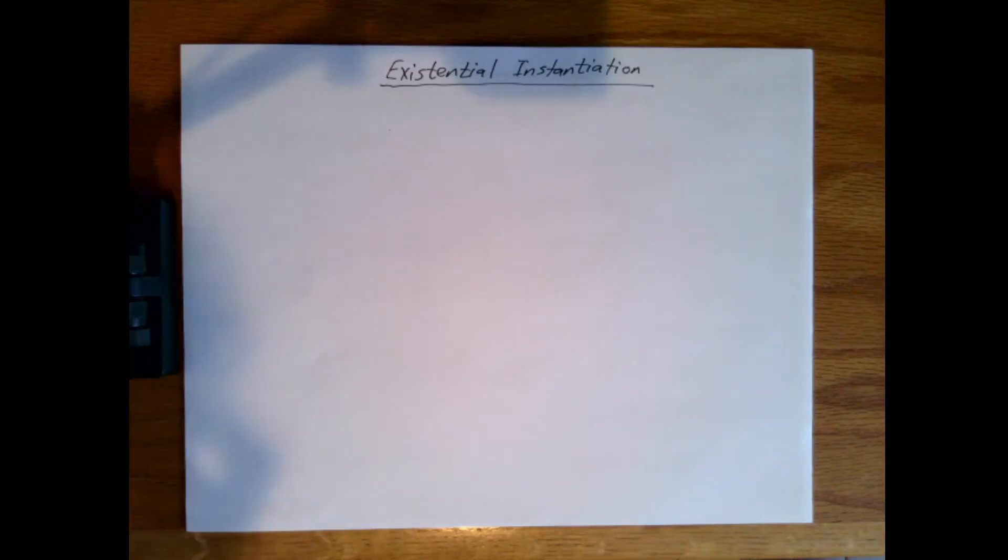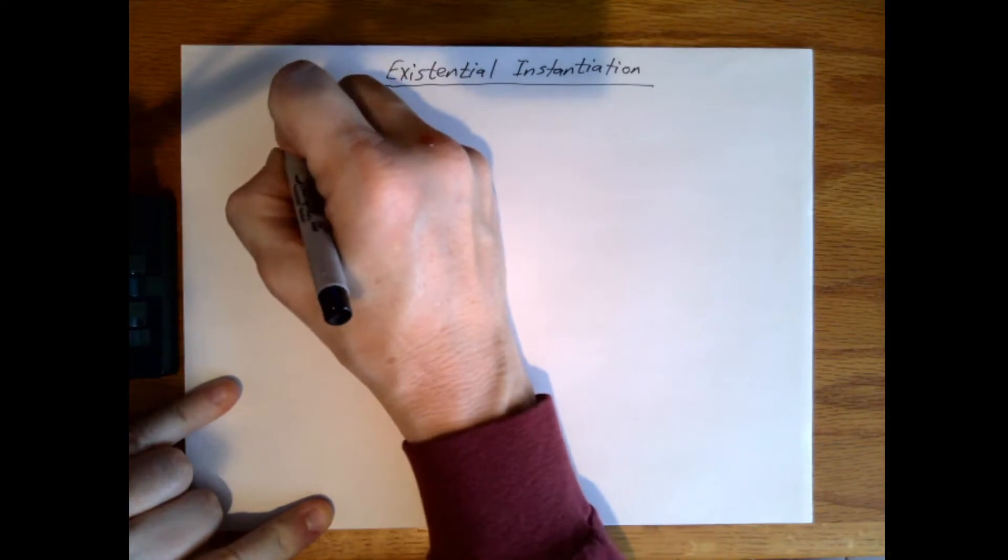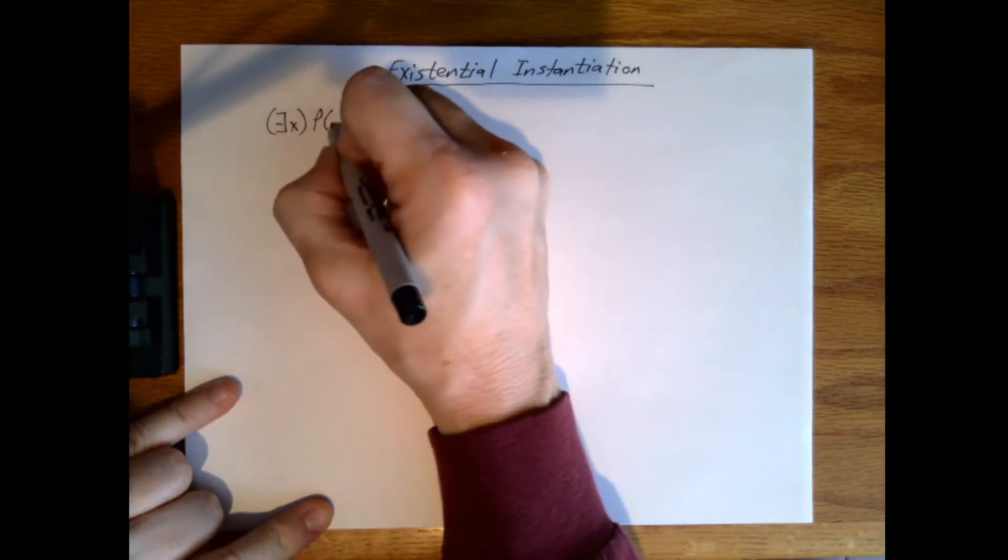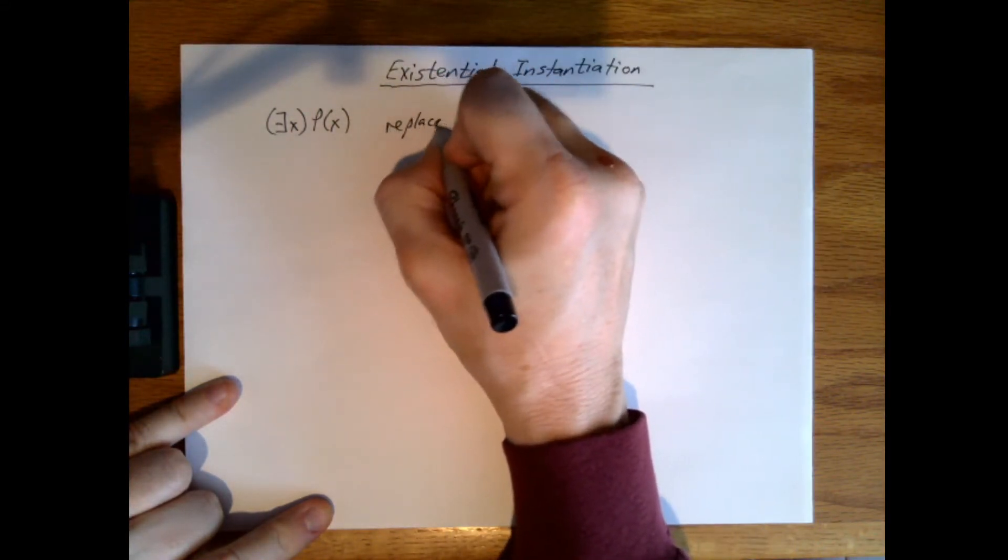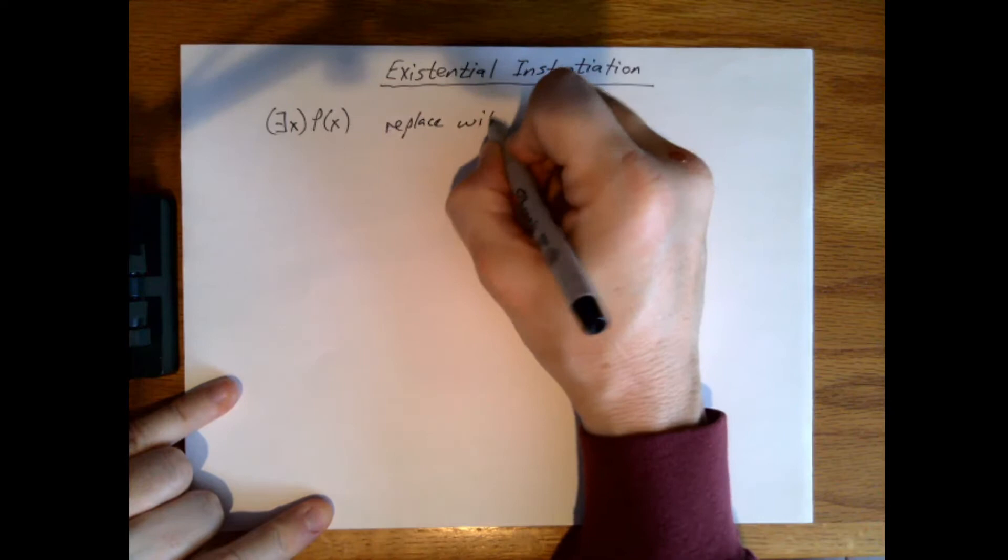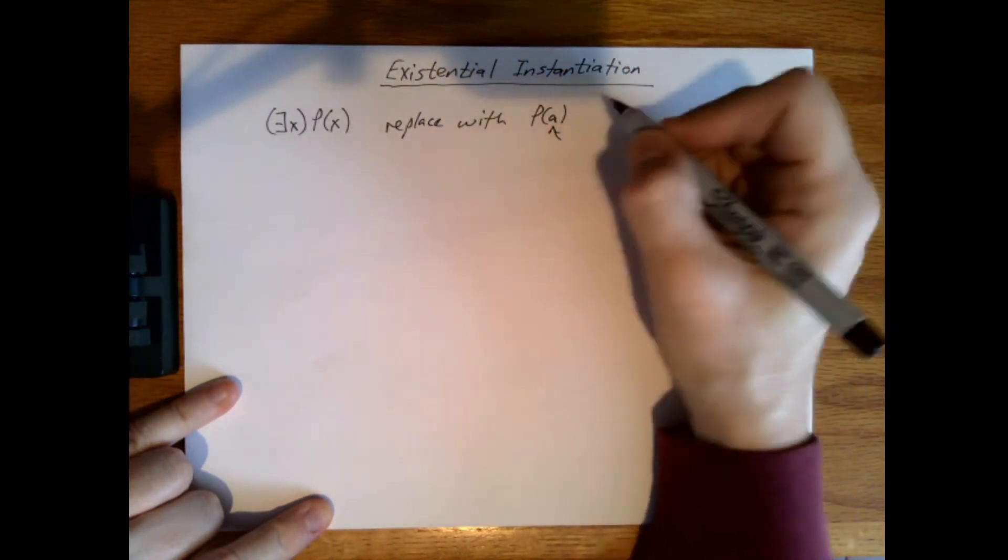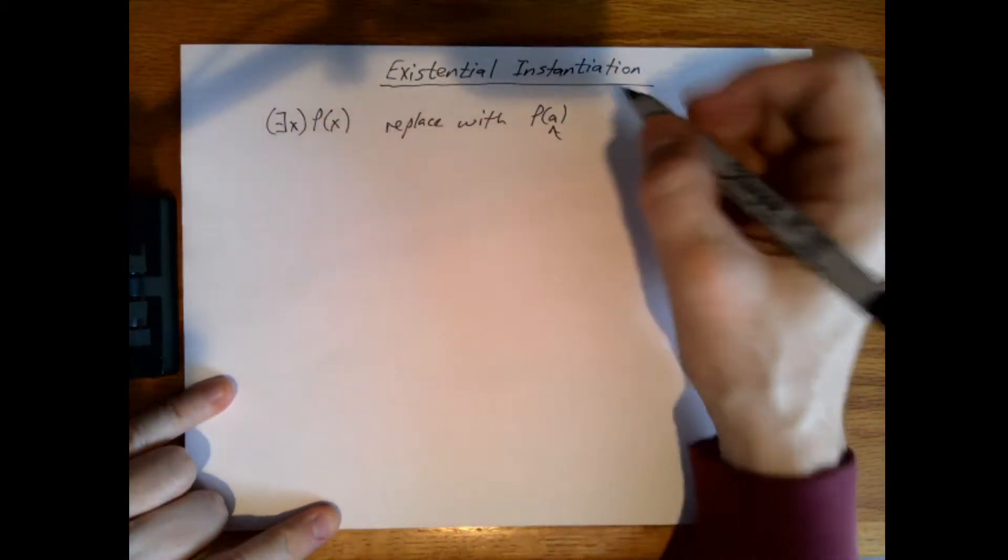Now we're going to look at the existential instantiation process. So that means we'd have something like E of X, P of X, and replace this with P of A, where A would be something from the domain that satisfied this particular relationship.